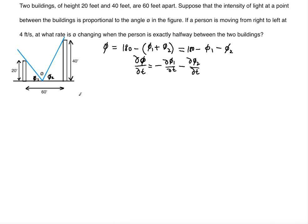We'll use the given information and work with the left and right triangles. These are right triangles because buildings are perpendicular to the ground, so there's a 90-degree angle at the base of each. We'll break the 60-foot distance between the buildings into two parts: label the base of the left triangle as x, and the base of the right triangle as 60 minus x.